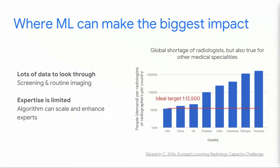The model will predict very well what you ask it to predict. When you think about where deep learning can make the biggest impact, it's really in places where there's lots of data to look through. One of our directors, Greg Corrado, puts it best: deep learning is really good for tasks that you've done 10,000 times, and on the 10,000th time you're just sick of it. This is really great for healthcare in screening applications where you see a lot of potentially normal patients. It's also great where expertise is limited — there's a worldwide shortage of radiologists and other medical specialists.